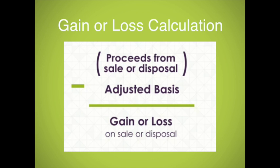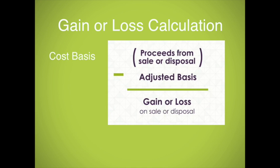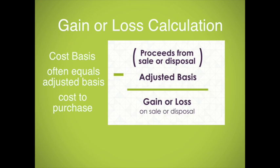In general, the adjusted basis is the cost basis, which is what you paid to buy the item. Cost basis can be increased by expenses you paid to get the asset ready for its intended use, such as shipping costs and installation costs. Additionally, there are detailed rules for costs that can be added to or subtracted from the cost basis when calculating the adjusted basis for different types of property and situations.